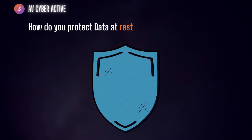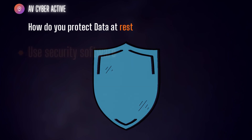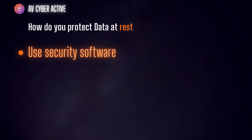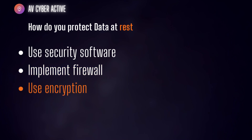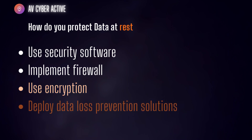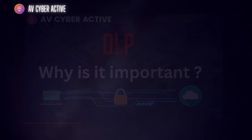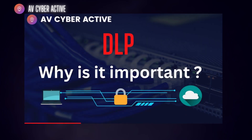There are a few ways to protect your data at rest. The first is to use security software, like an antivirus. Implement a firewall — most likely a host-based firewall. Use encryption, which is very important — standards like Triple DES, AES, and others. And finally, deploy data loss prevention (DLP) solutions, so that any confidential data generated does not leave the organization without proper approvals. If you want to know more about DLP, check out the video on the cards.